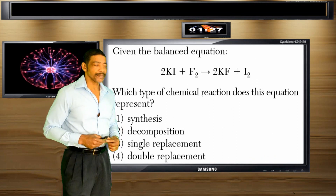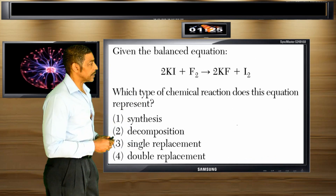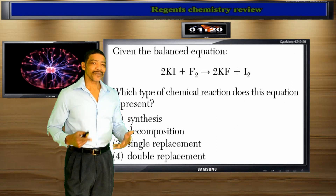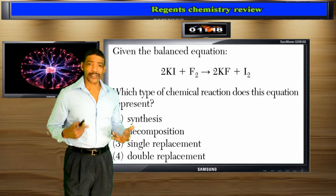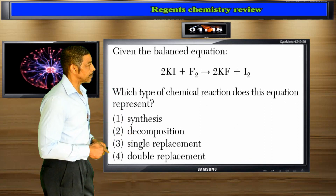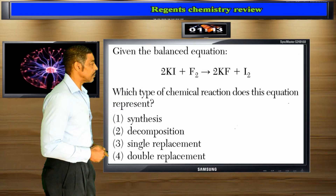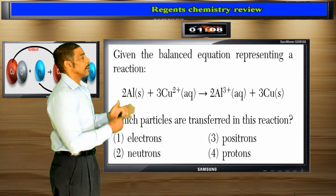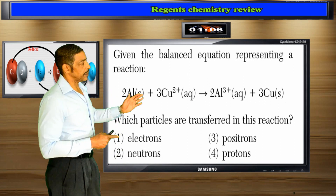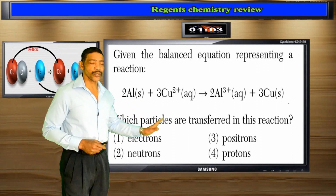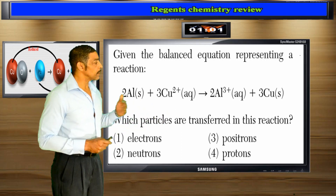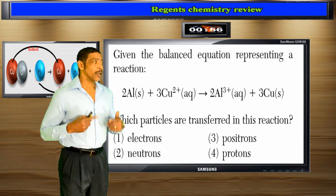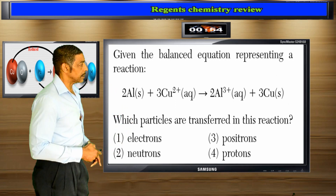Given the balanced equation, which type of chemical reaction does the equation represent? Remember, a single replacement reaction involves a reaction between an element and a compound. So the best answer to this question is number 3. Given the balanced equation representing a reaction, which particles are transferred during the reaction? You must remember the only particles transferred during a chemical reaction will be electrons — number 1.